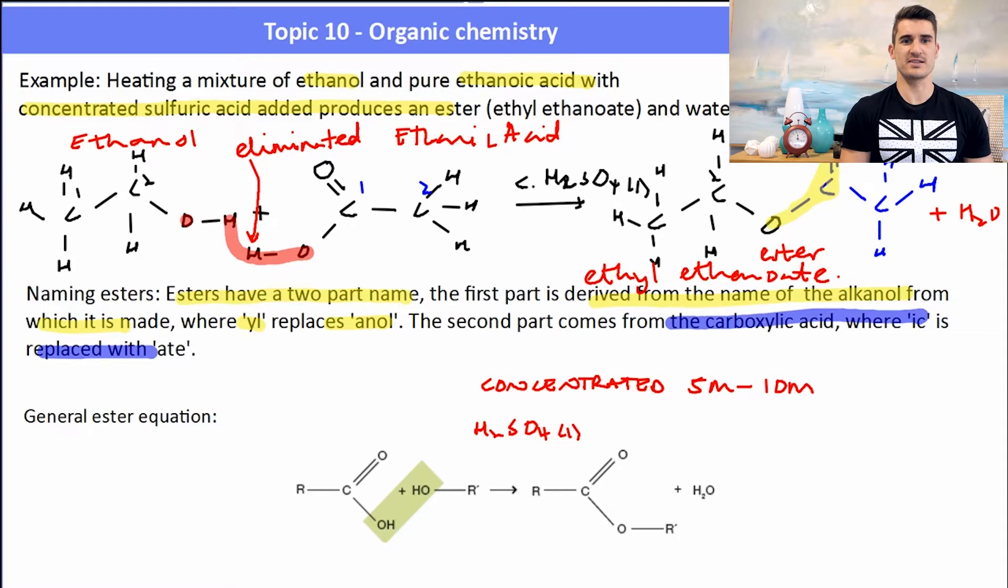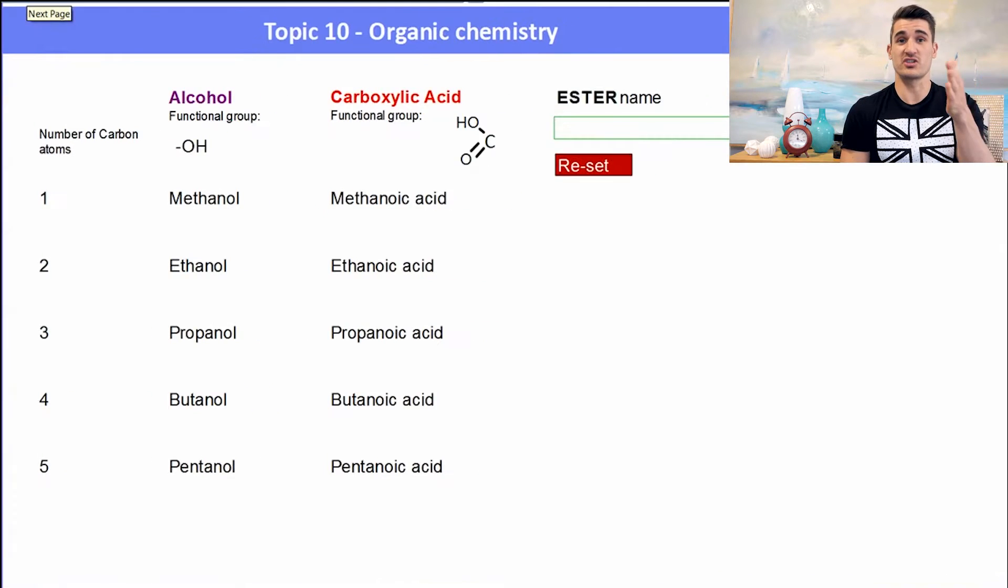Okay, so here's some more practice with the naming. What I'm going to do is pick some alcohols and acids and we're going to have a go at naming the ester. So the first one: if we have methanol and ethanoic acid, we would form methyl ethanoate. The next one: butanol and ethanoic acid. Well, what would we form from those two? Butyl propanoate. The next one: if I have pentanol and pentanoic acid, I would form pentyl pentanoate.